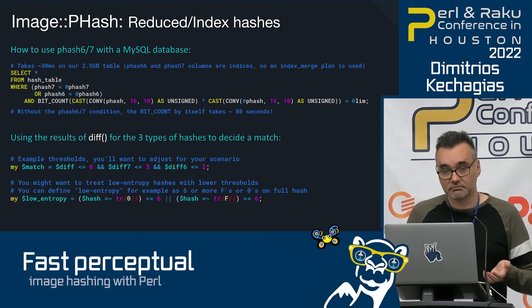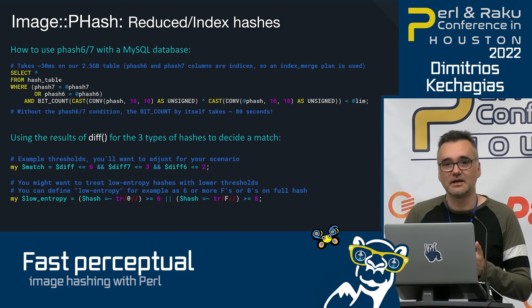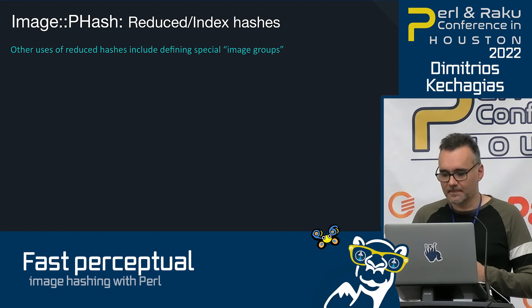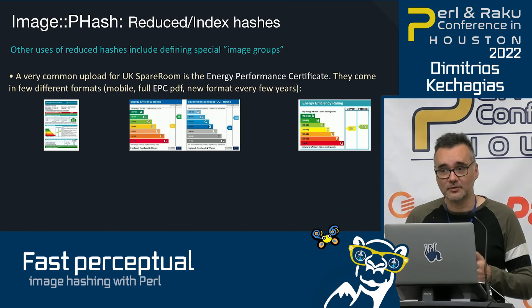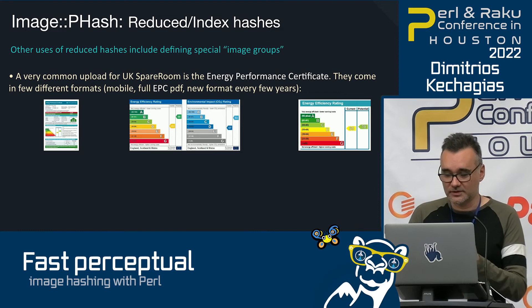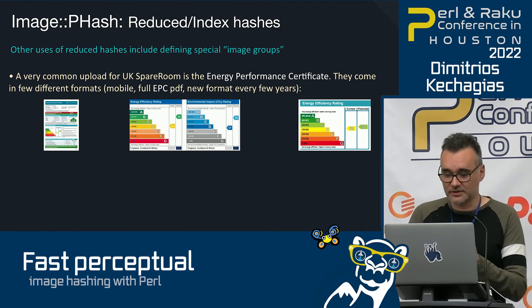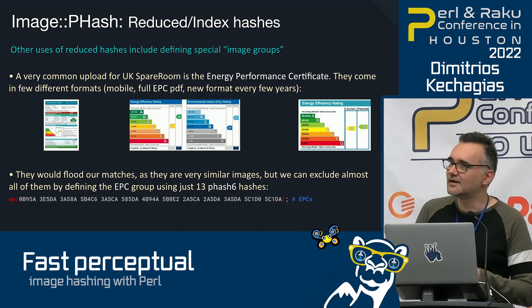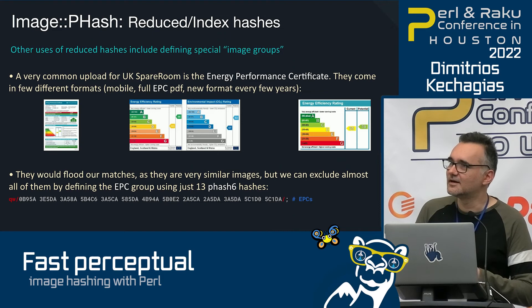A good practical use of phash6: we have many people uploading Energy Performance Certificates, which we don't want showing as similar ads. We managed to encode all 13 EPC categories as just 13 phash6 index values. Whenever they add a new EPC type we just add one more value.